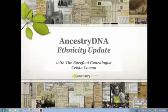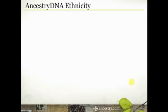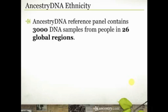My pleasure. So today we're going to talk about the ethnicity update and just dive right in. The AncestryDNA reference panel contains 3,000 DNA samples from people in 26 different global regions. AncestryDNA has found 3,000 people who have DNA from one of these global regions, and we're using that to compare against your DNA to determine if you have DNA from one of those regions.